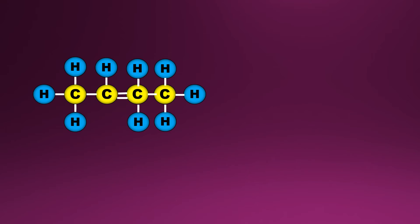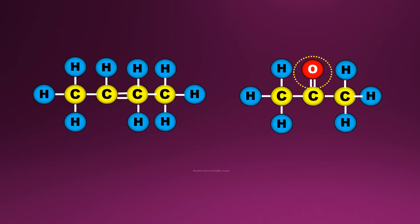There can also be double bond between carbon and carbon atom in a straight chain. In the same way, there can also be double bond between oxygen and carbon atom. So, this is double bond straight chain.